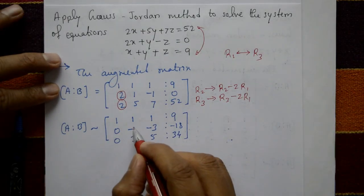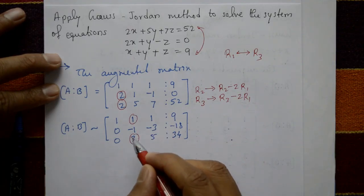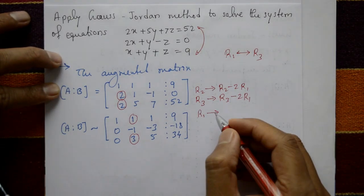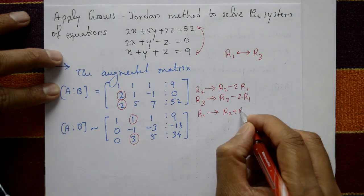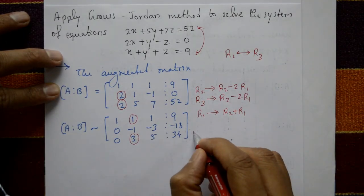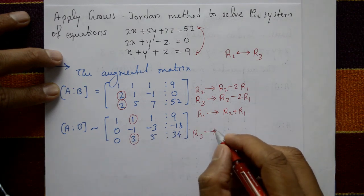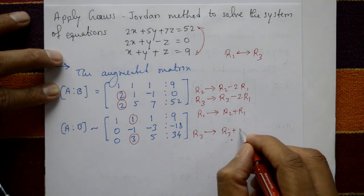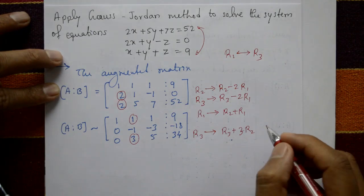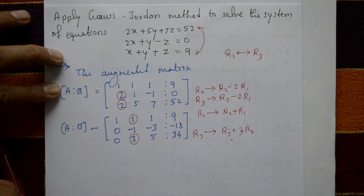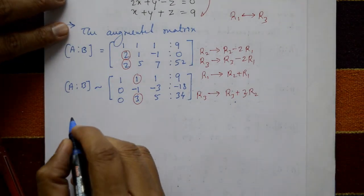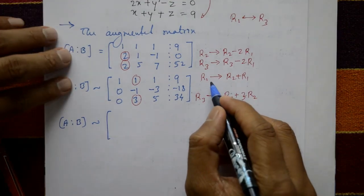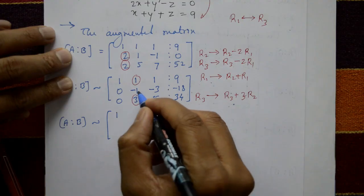Next, make the elements in column 2 (above and below the pivot) equal to zero. Apply R1 = R2 + R1 using the second row, and R3 = R3 + 3R2 multiplying R2 by 3.